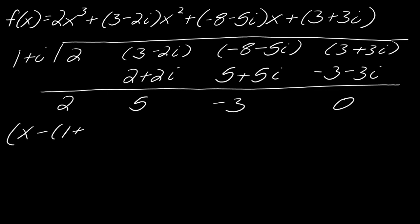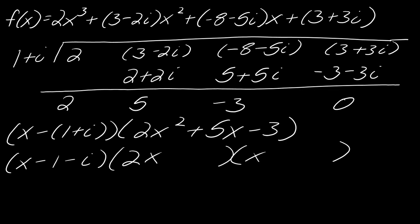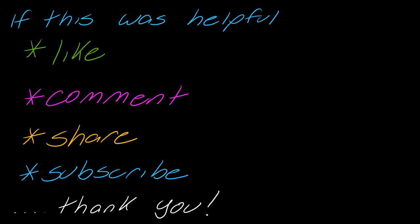The result after synthetic division is 2x² + 5x minus 3. One factor is (x minus 1 minus i). Factoring 2x² + 5x minus 3 gives (2x minus 1)(x + 3). So the complete factored form has three linear factors, and we're done.